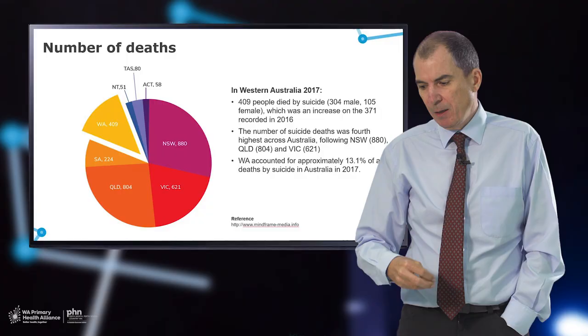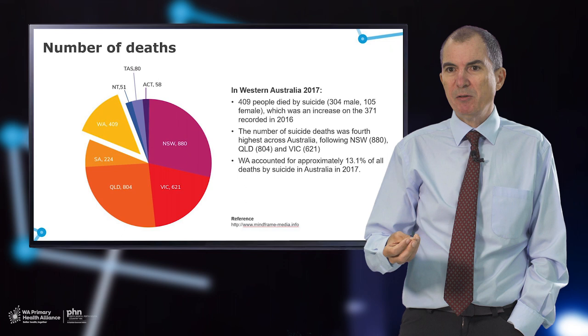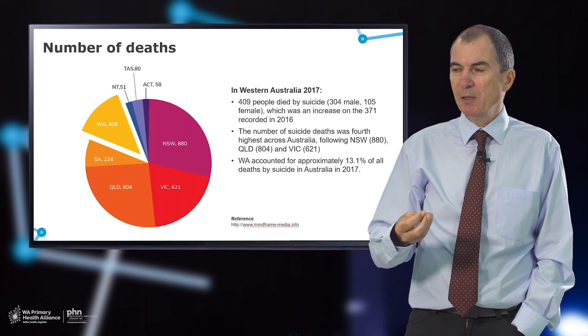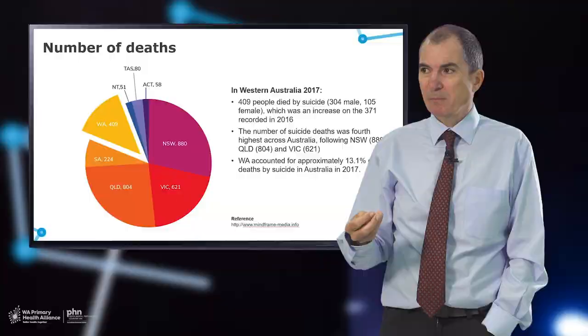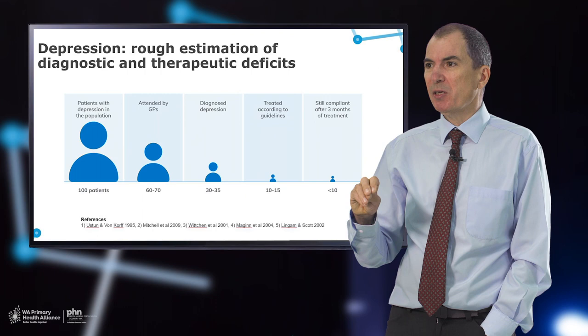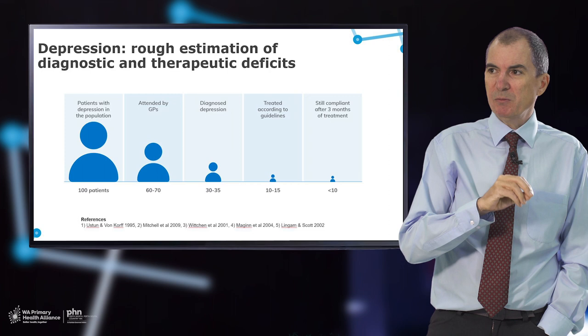GPs see patients with depression in the context of multi-morbidity. The common multi-morbid triangle is a cardiometabolic condition combined with a painful condition and depression. Of 100 people in the community with a depressive episode, 60–70% will be seen in general practice, of which half will be diagnosed at their first appointment. Less than half of those diagnosed will be treated according to guidelines, and a very small proportion will still be in treatment at three months.